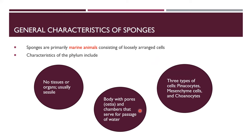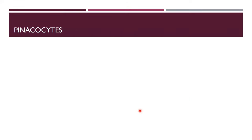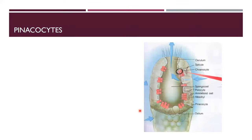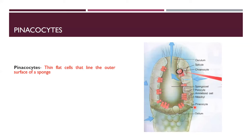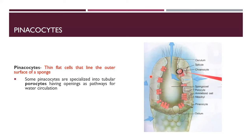There are three types of cells in sponges: pinacocytes, mesenchyme cells, and choanocytes. Pinacocytes are thin flat cells that line the outer surface of the sponge. Some pinacocytes are specialized into tubular porocytes — pores where water enters, providing openings as pathways for water circulation.